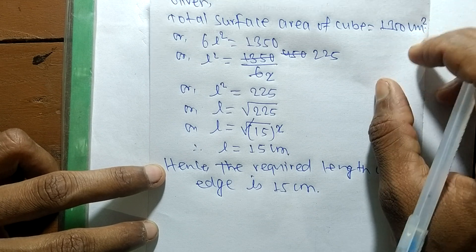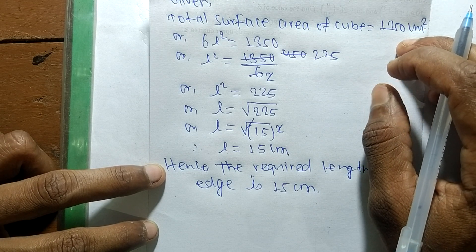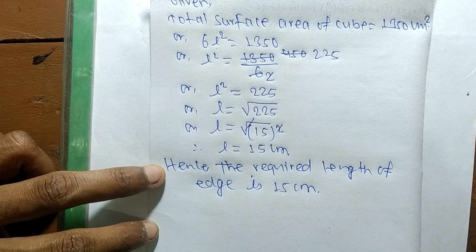So in this way we can find out the length of sides of a cube if its total surface area is given by using the formula 6L². This is all for today, thanks for watching.